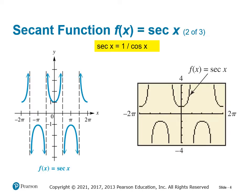If we look at that graph, we can see that we have asymptotes where the secant is undefined, and we have these parabola shapes in between the asymptotes. This will make a little more sense in a minute when we can see this graph superimposed on its reciprocal function, cosine.